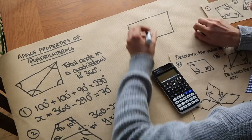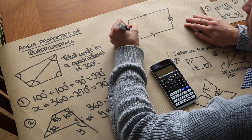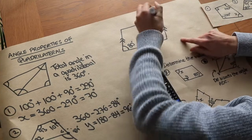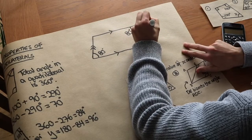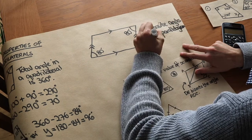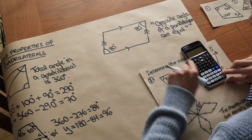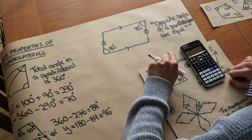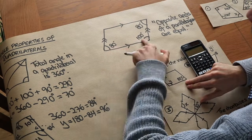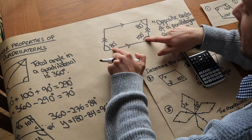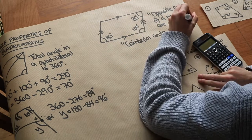Now we have angle properties of parallelograms. A parallelogram has two pairs of parallel sides. If one angle is 80 degrees, then by rotational symmetry the opposite angle is also 80 degrees — opposite angles of a parallelogram are equal. The other two angles are found by doing 360 minus two lots of 80, giving 200, then dividing by 2 to get 100 degrees each. These adjacent angles add to 180 degrees — we call these co-interior angles.